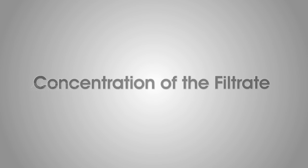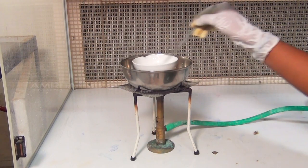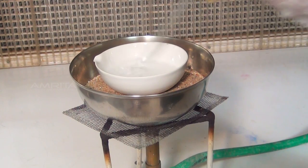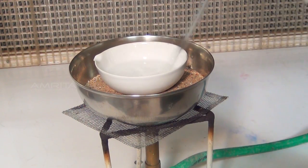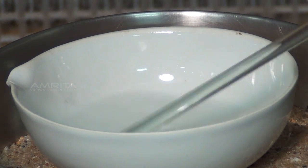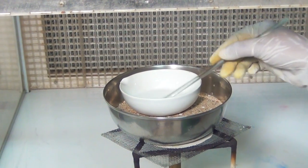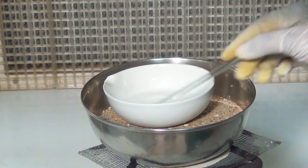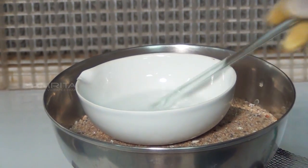Concentration of the Filtrate. Heat the china dish in a sand bath till the solution is reduced to about one third of its original volume. To avoid crust formation on the sides of the dish, stir the solution continuously with the glass rod.